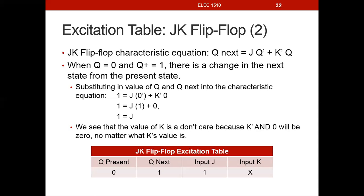The next combination: Q in the present state is 0 and Q in the next state is 1. Using the characteristic equation, substituting Q next = 1 and Q present = 0, we again get J·1 or 0, which reduces to J must be a 1. So when Q present is 0 and Q next is 1, input J must be 1, and K is a don't care.